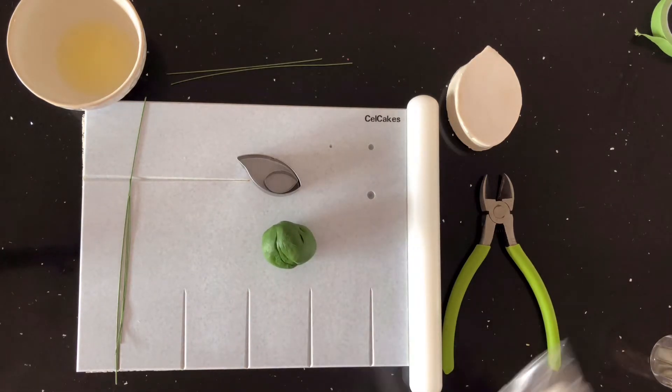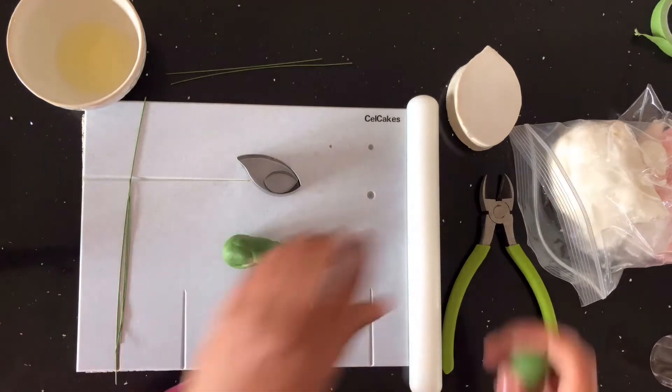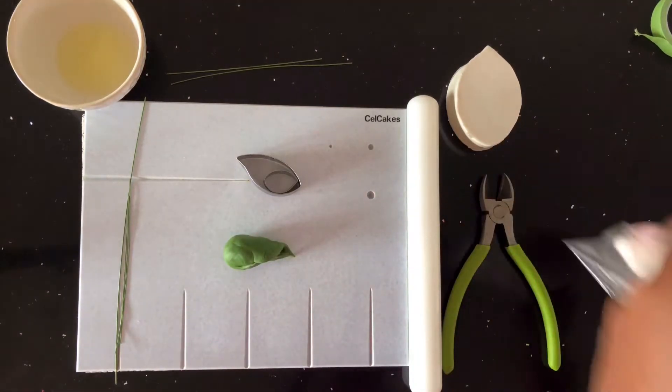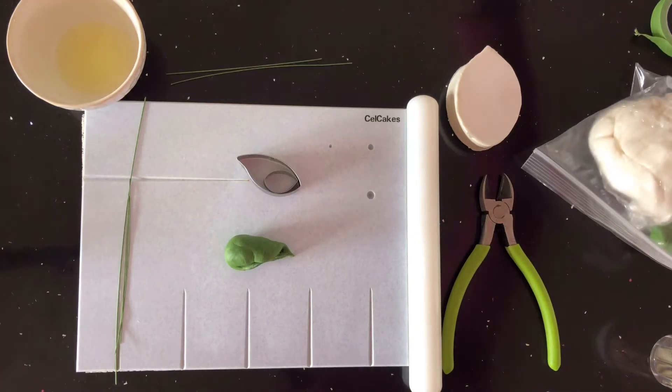Using our moss green gum paste, we're going to want to take off a piece and work with only the amount that you want to create with. So you're not going to want to use the whole piece of green gum paste, you're going to want to work in smaller chunks so that your gum paste doesn't dry out.